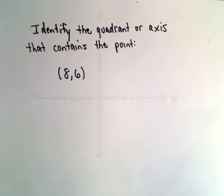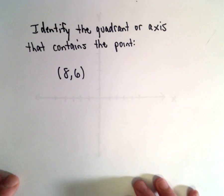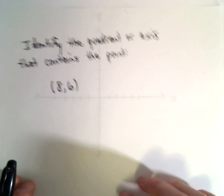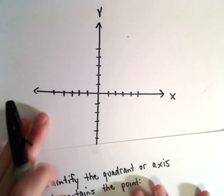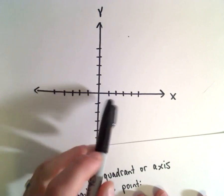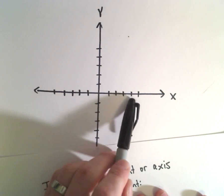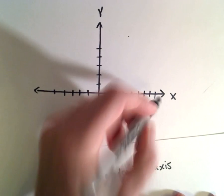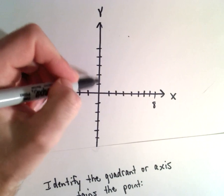Here we're going to identify the quadrant or axis that contains the point. The first coordinate of 8 tells us how far we travel along the x-axis. So we'll travel — 1, 2, 3, 4, 5, 6, 7, 8 — so we've moved over 8 units on the x-axis.